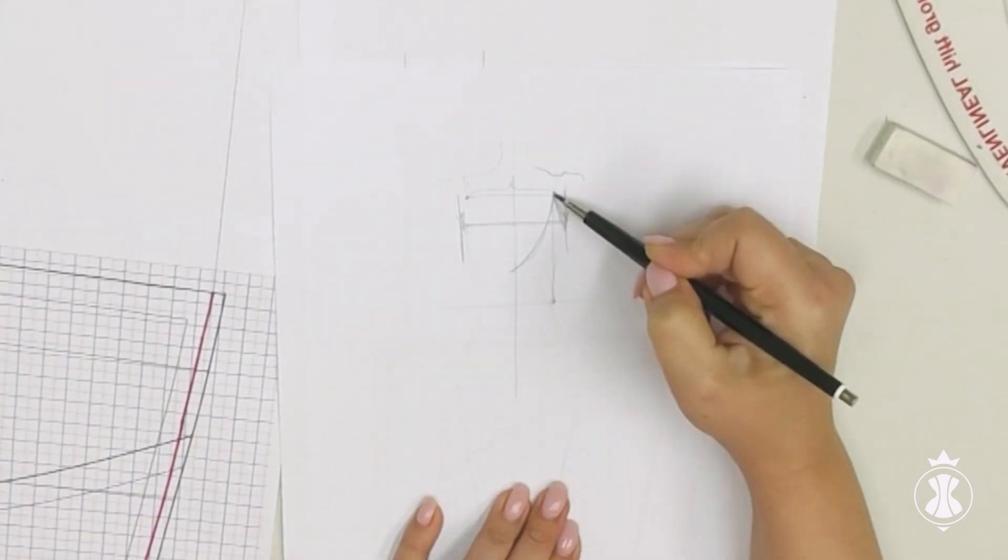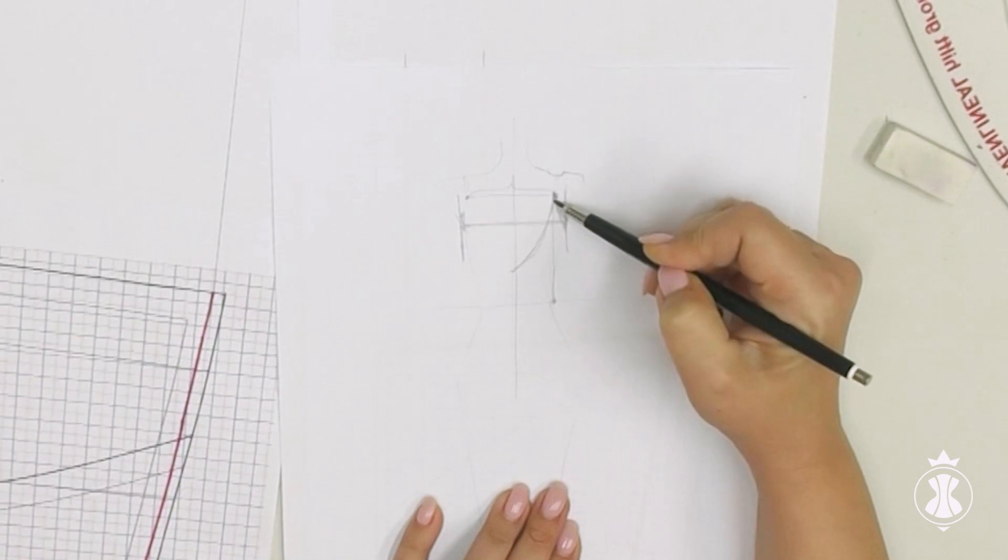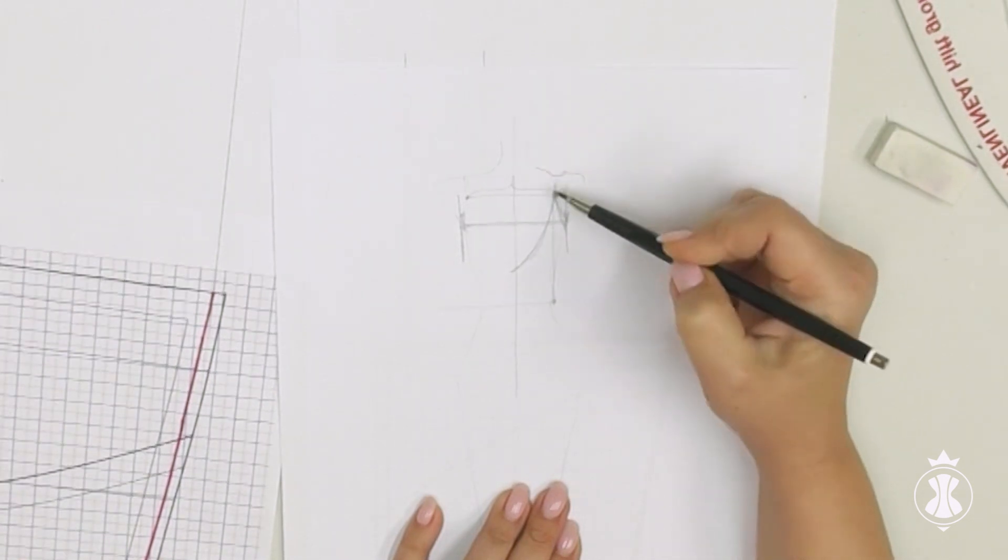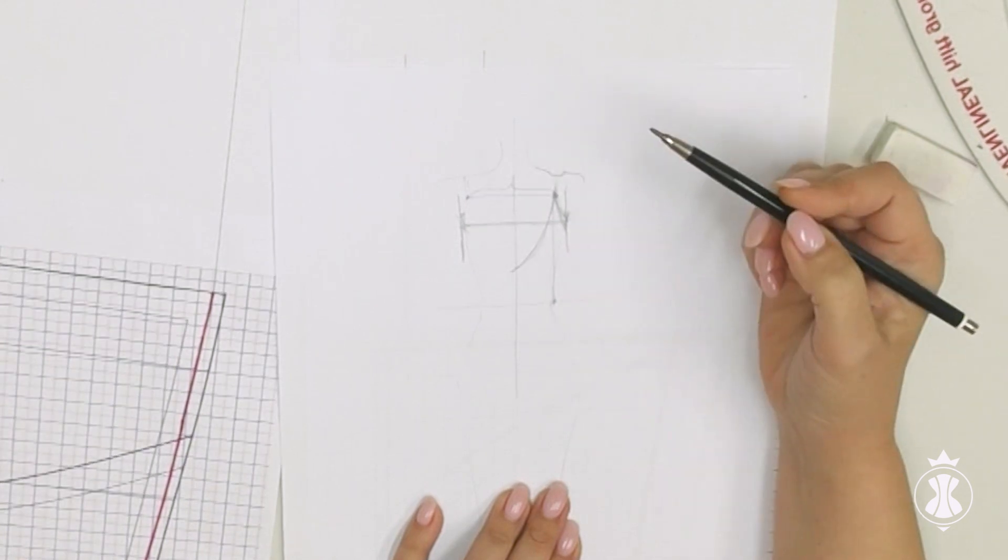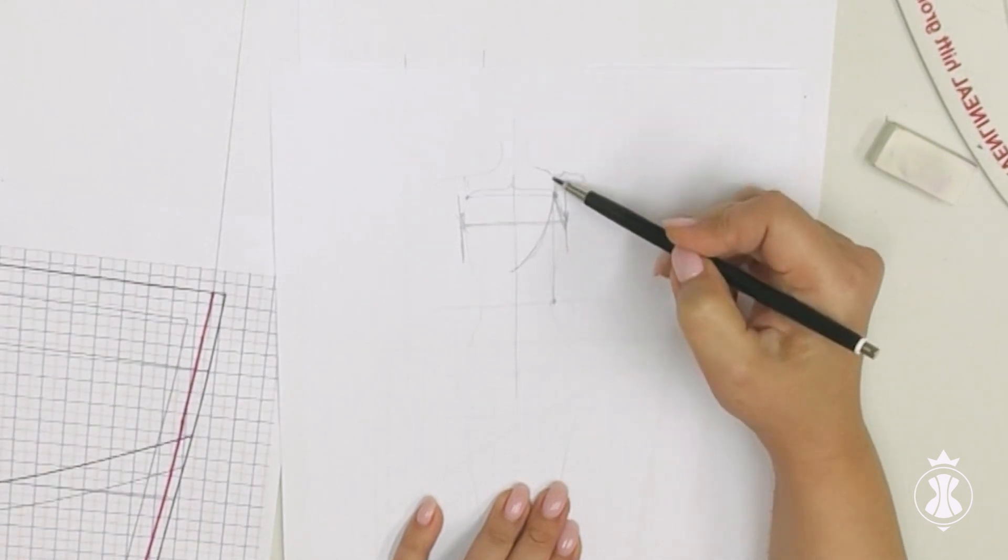When you make this corner, make sure that the strap from the corner is in the same place as the strap of the bra. And in this case, the strap of the corset will be tight in this hollow.